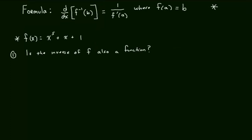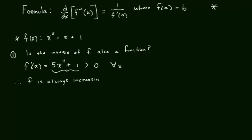Here we have the function f of x, and in number one: is the inverse of f also a function? We're going to use calculus to describe this. The first thing I'm going to do is find the derivative of f of x, which is 5x to the power of 4 plus 1. If you look at this function, you can see it is always positive — no matter what you plug in for x, it will be raised to an even power making it positive, and then we're adding 1, so this is going to be greater than 0 for all x. Therefore, we say that the function f is always increasing, and f passes the horizontal line test.